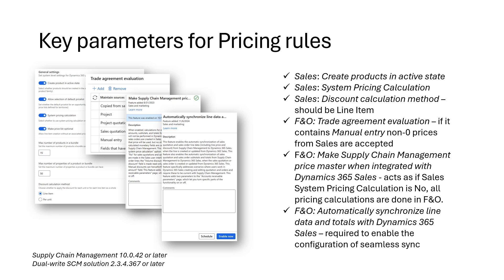The F&O trade agreement evaluation, if it contains manual entry, means non-zero prices and discounts from Dynamics 365 Sales will be accepted. The F&O 'make Supply Chain Management price master' setting, when enabled, means no pricing calculations are done in Sales and all calculations are done in Finance and Operations. This feature is a prerequisite setting for the dual-write seamless sync. Additionally, F&O automatically synchronized line data and totals with Dynamics 365 Sales is also a prerequisite for configuring dual-write seamless sync.